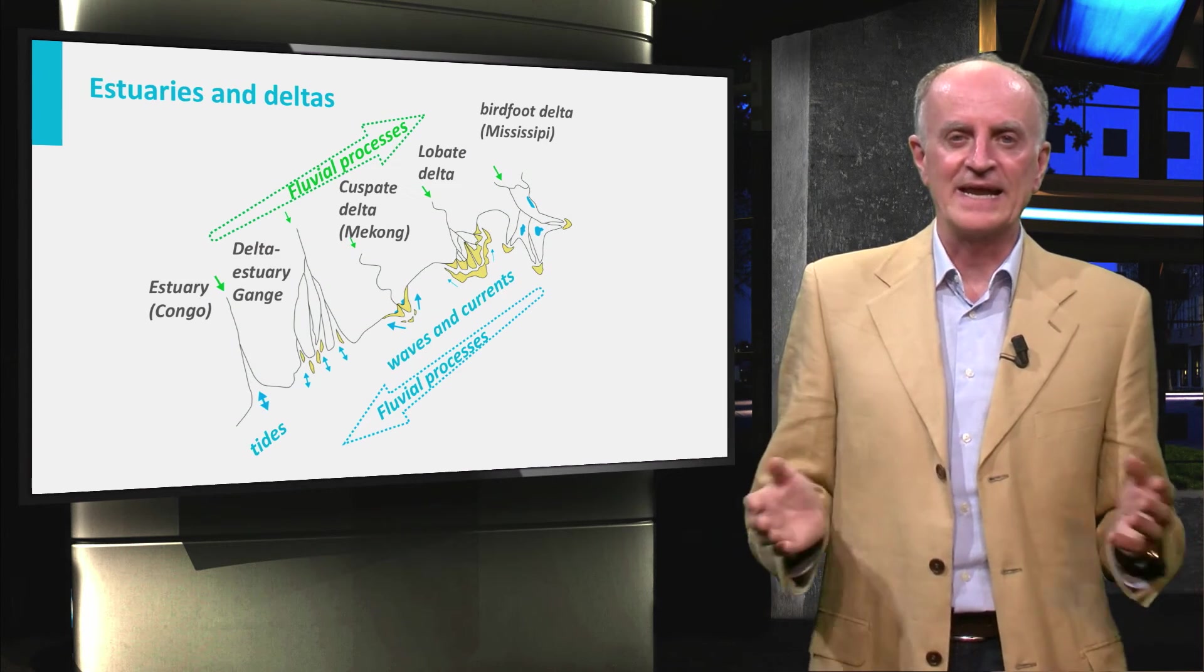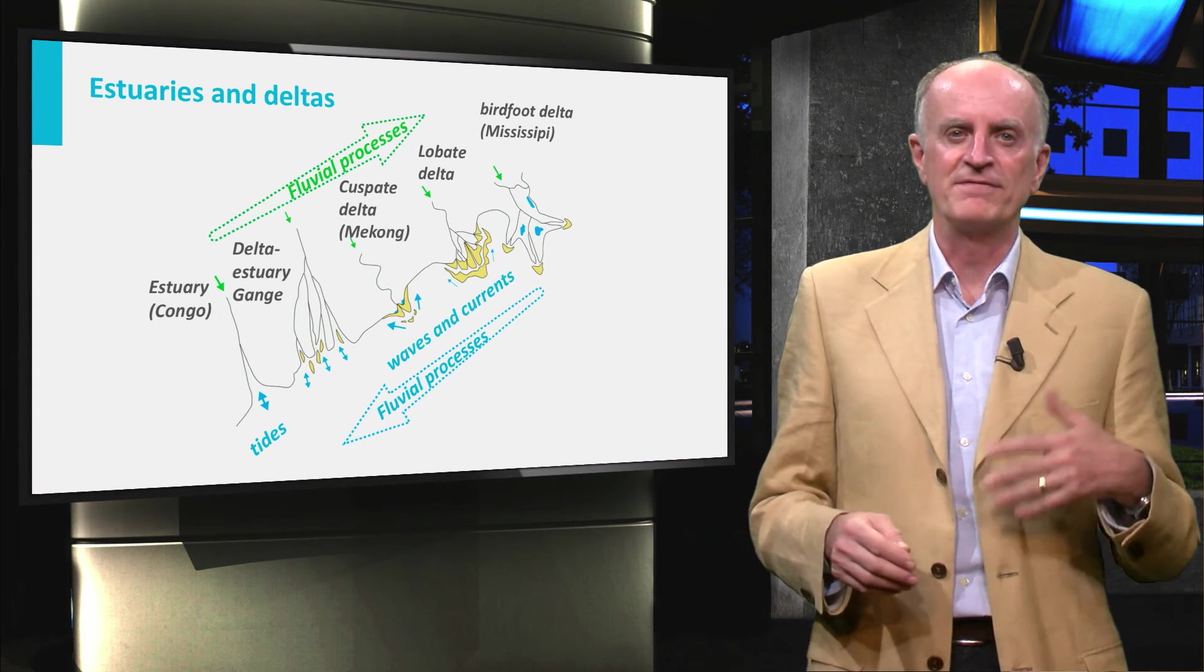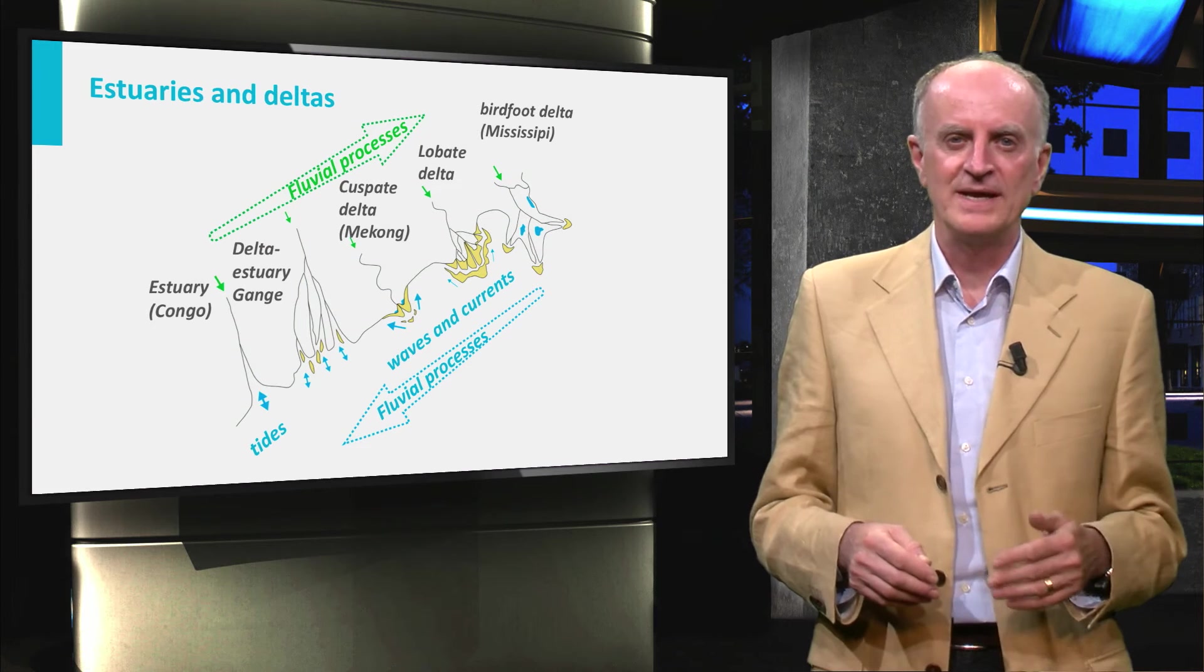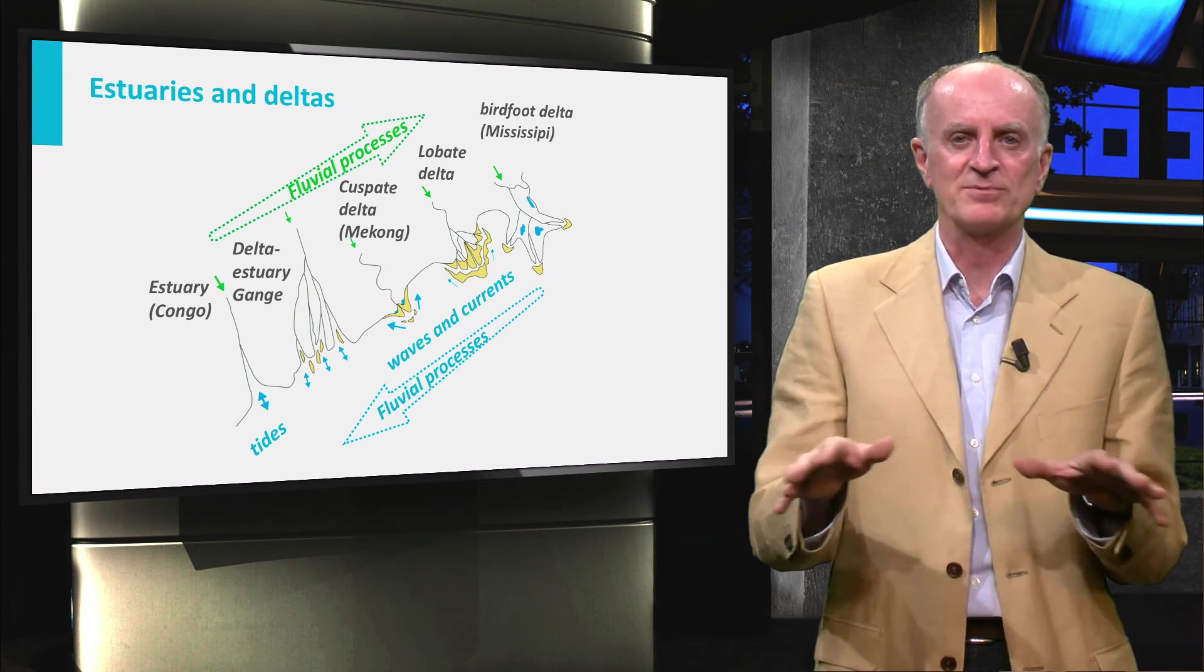Estuaries and deltas are end members of a continuum. In general, deltas are favored by high sediment input and weak movements in the water column, which prevents sediments being transported away.